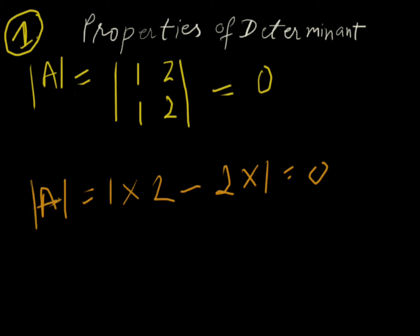Next property is: if all the elements of any row or any column is 0, then the value of determinant will be 0.